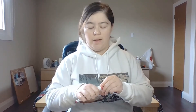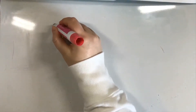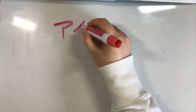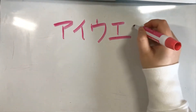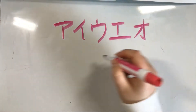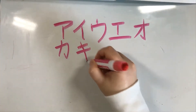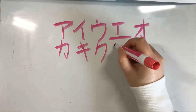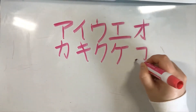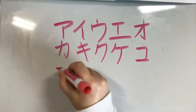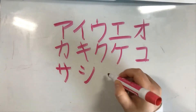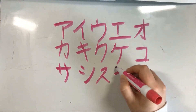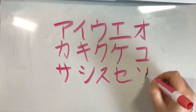First let's do some review of the katakana that we learned last week. So we learned: a, i, u, e, o, ka, ki, ku, ke, ko, sa, shi, su, se, so.